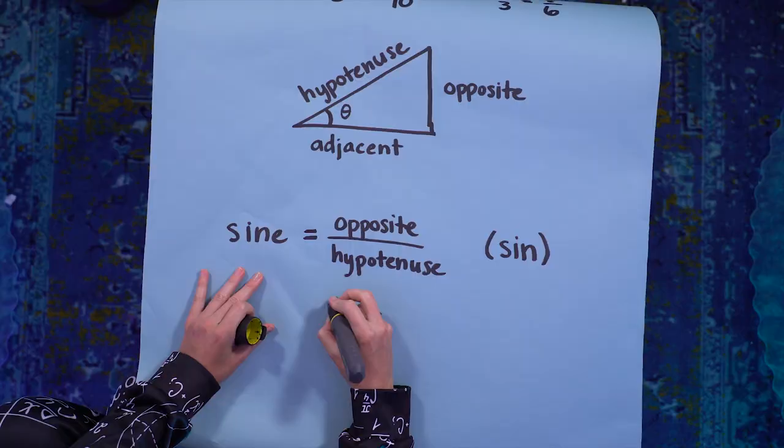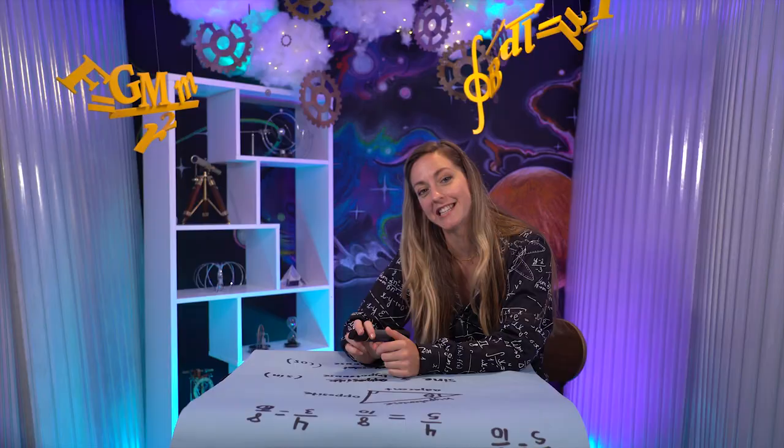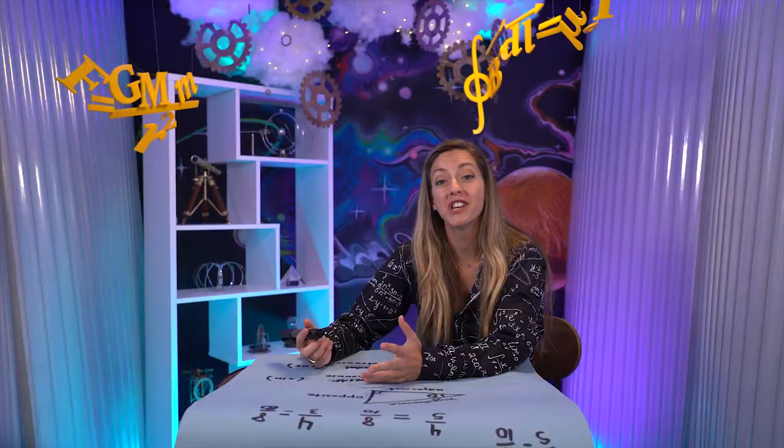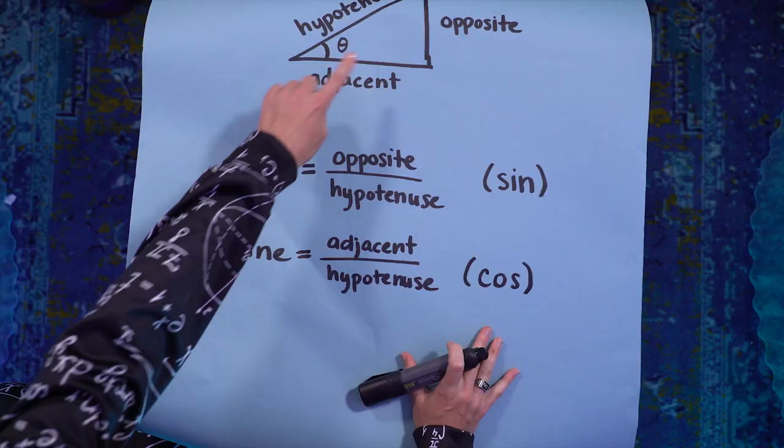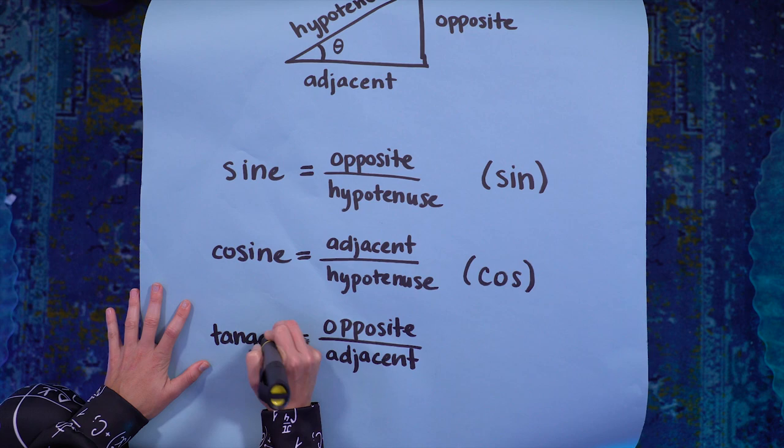Next, the ratio of the adjacent side of the hypotenuse. We call that the cosine of the angle theta, which came from the Latin complementi sinus, the complement of the sine. And you usually see it written as cos. And then the final ratio that's important is of the opposite to the adjacent. That ratio is called the tangent. The tangent, which comes from the Latin for the word touching, and is shortened to tan.